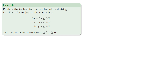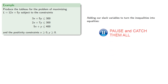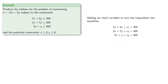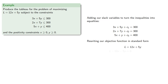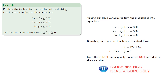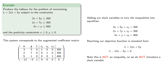So let's produce the tableau for this problem. Adding slack variables to turn the inequalities into equalities, and rewriting our objective function in standard form. It's important to note that this is not an inequality, so we do not introduce a slack variable. This system corresponds to the augmented coefficient matrix, where we'll indicate the free variables in bold — so here x and y are the free variables.